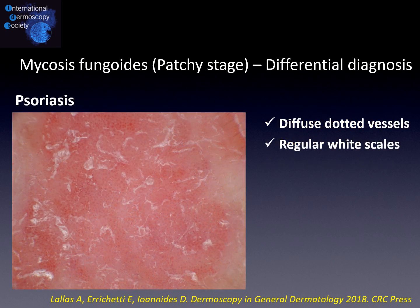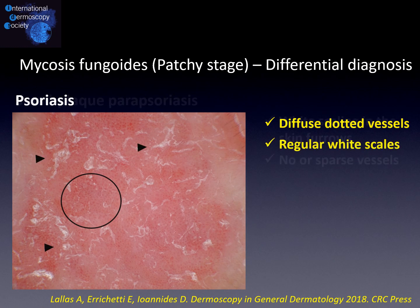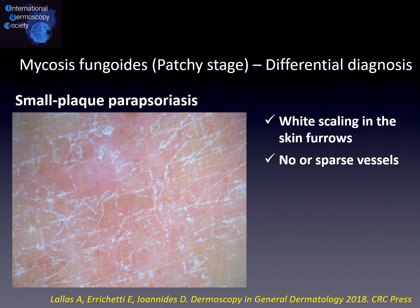Psoriasis typically shows a completely different dermoscopic picture, including diffuse dotted vessels and regular wide scales. Finally, small plaque parapsoriasis may be distinguished from mycosis fungoides in its patch stage by highlighting wide scaling in the skin furrows. Additionally, in this condition we usually don't have vessels, or we may see just sparse vessels.